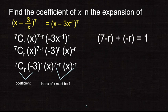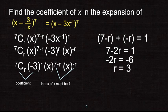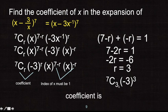Combining the indices of x using the product rule: 7 minus r plus negative r equals 1, giving 7 minus 2r equals 1, so r equals 3. Now that we know r equals 3, we plug it into the coefficient: combination of 7 taken 3, multiplied by negative 3 to the power of 3. This gives a coefficient of negative 945.